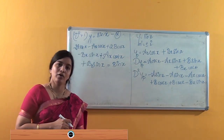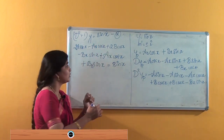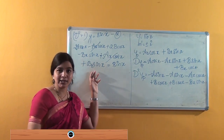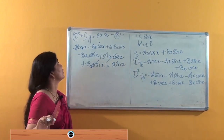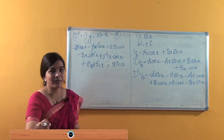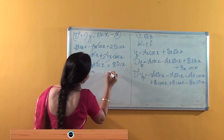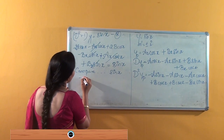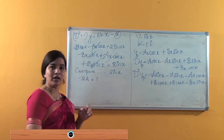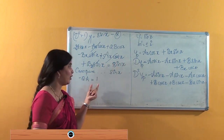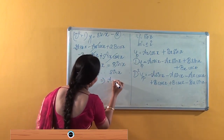We can simplify: the Ax cos x terms cancel (plus and minus), and the Bx sin x terms also cancel. What remains is to compare the coefficients of sin x and cos x. Comparing coefficients of sin x: −2A = 1, which gives A = −½.